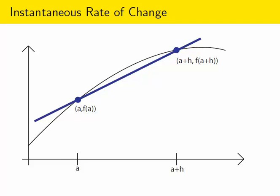So by calculating the slope of the blue line you see here, we would get the average rate of change of this function over the interval from x equals a to x equals a plus h.